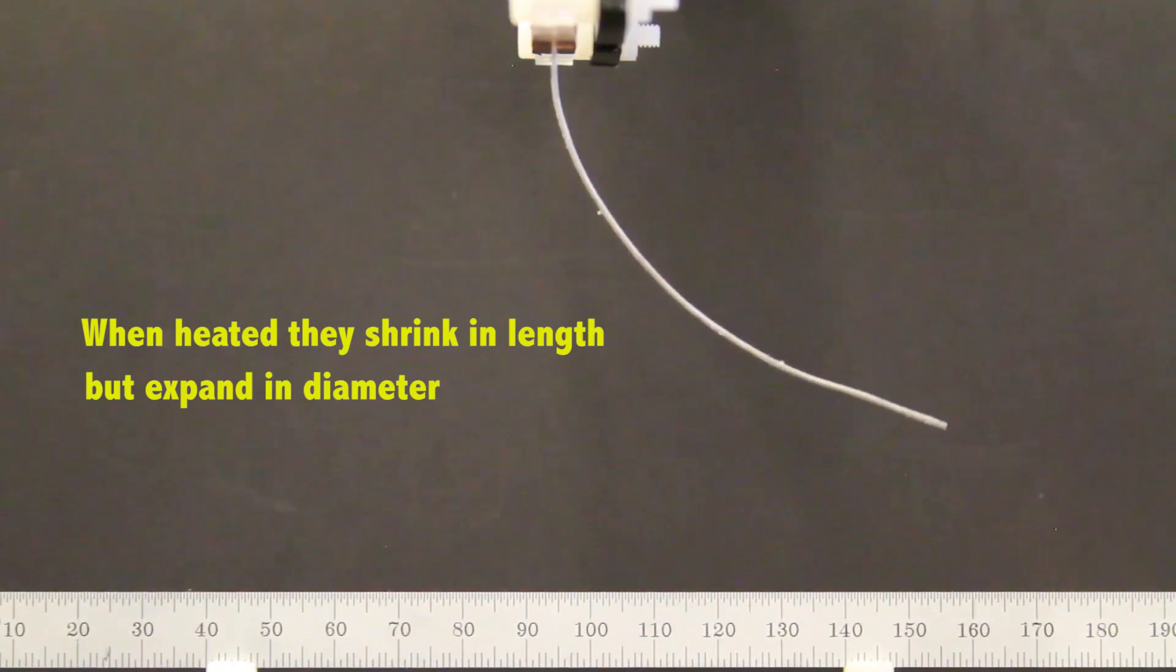The researchers found that by modifying the shape of the fiber and then selectively heating it on one side, they can force the fiber to bend.